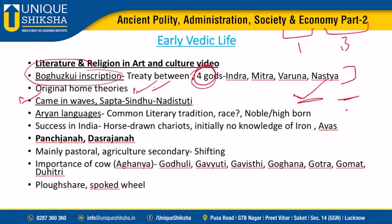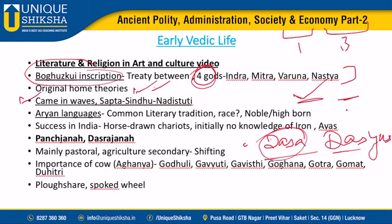Apart from Aryans, there is mention of Dasas and Dasyus. It is considered that Dasas were Aryans themselves - those who came in earlier waves. Dasyus were the original inhabitants of India; some claim they were the IVC people, but this is still disputed. The racial concept of Aryan has been negated, and 'Arya' literally means a person of high birth or respectable/noble family.